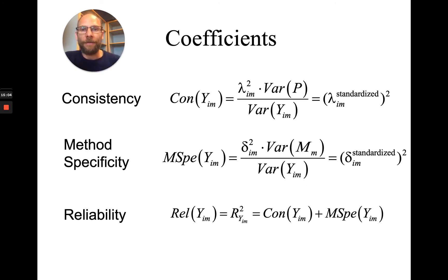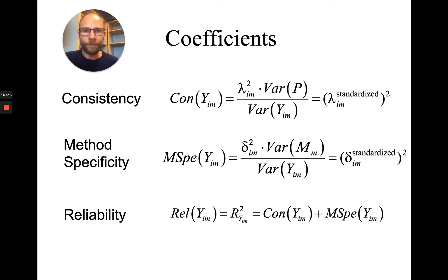This shows how a model with a method factor allows you to address different issues. You can avoid correlated errors, which can lead to non-parsimonious models with many parameters — some significant, some not — and which cause you to underestimate the reliabilities of your variables because a systematic source of variance is not taken into account. With this model, we can also quantify convergent validity relative to a reference set of indicators versus method specificity in terms of variance components, and learn what proportion of the variance in an indicator is specific versus shared with a reference method.